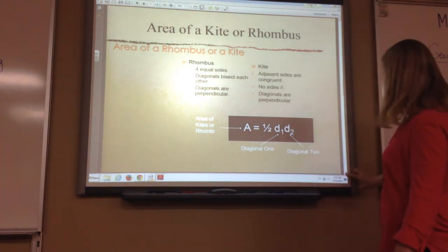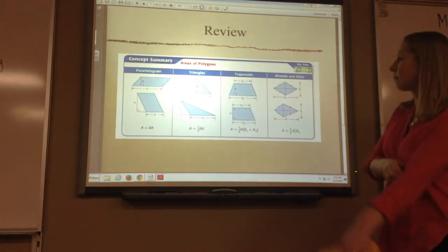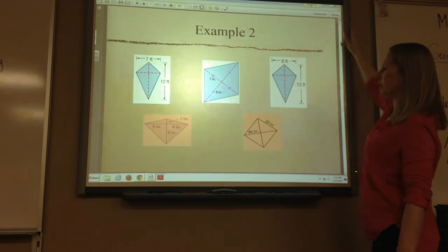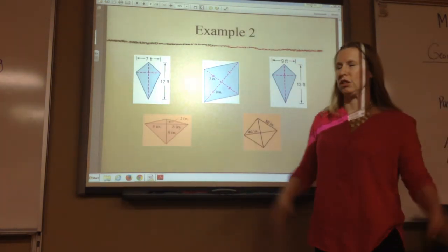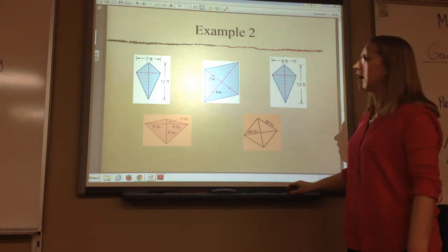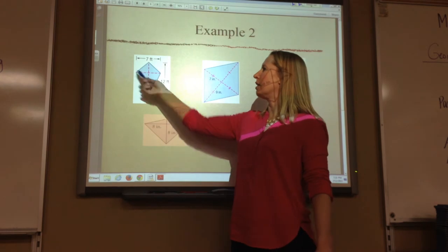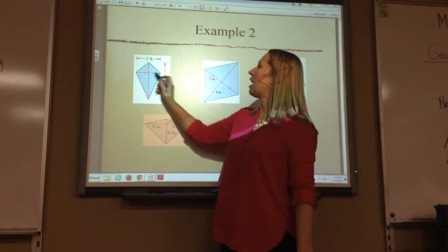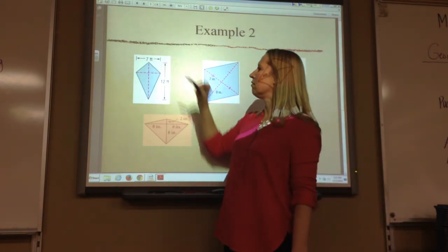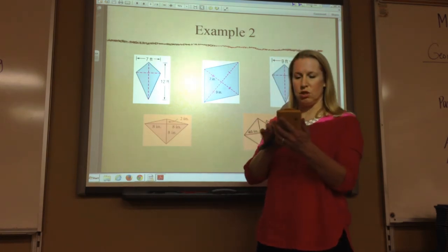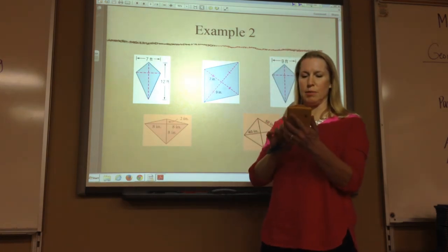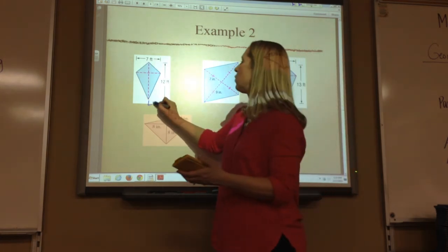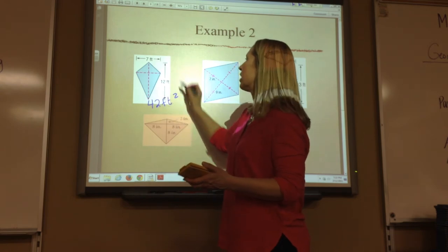Let's try some. All you do is multiply the diagonals and divide by two. This diagonal is seven, this diagonal is twelve — so just do seven times twelve and divide by two. You get forty-two feet squared.